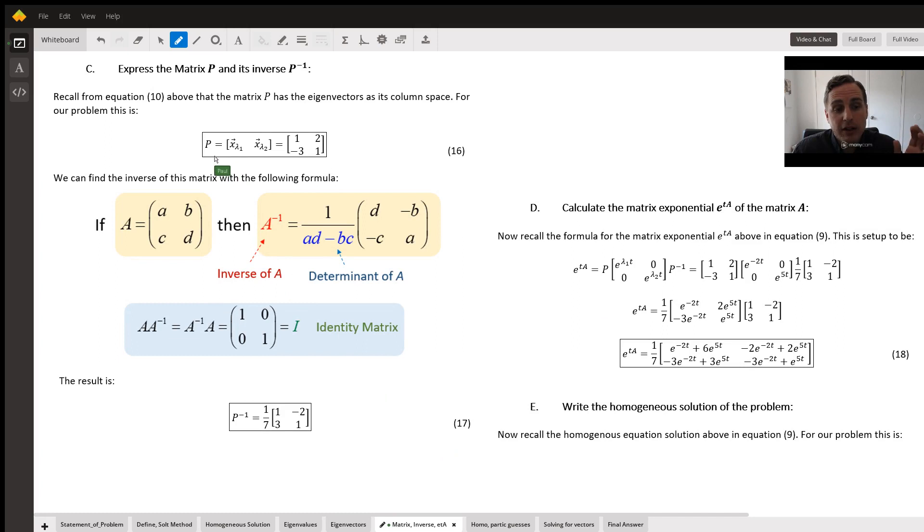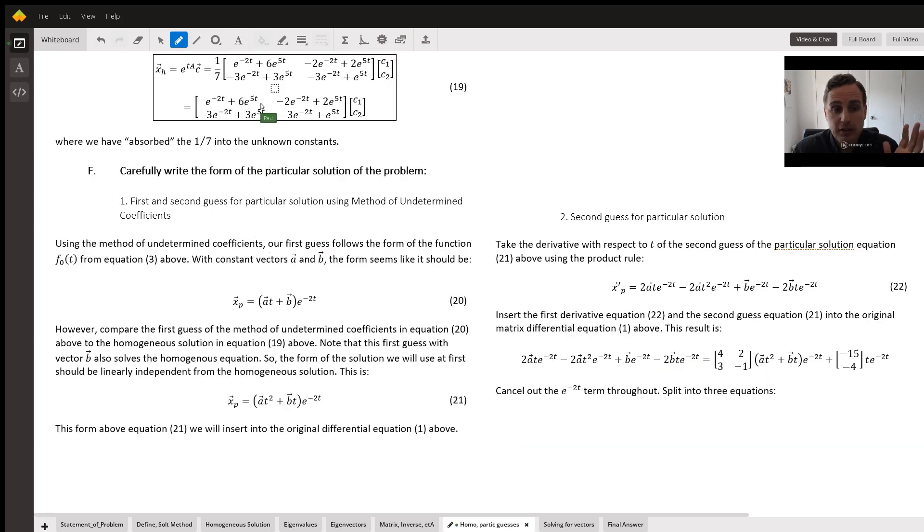So then what we do is we calculate the P matrix, which is the columns are the eigenvectors. Then we calculate the P inverse given by this formula, which is sort of switching the entries around and then dividing by the determinant of matrix A if it's 2 by 2. Then we take P times that diagonalized matrix times P inverse, and that's how we get this long expression for the matrix exponential. Now we have the homogeneous solution, then we need the particular solution.